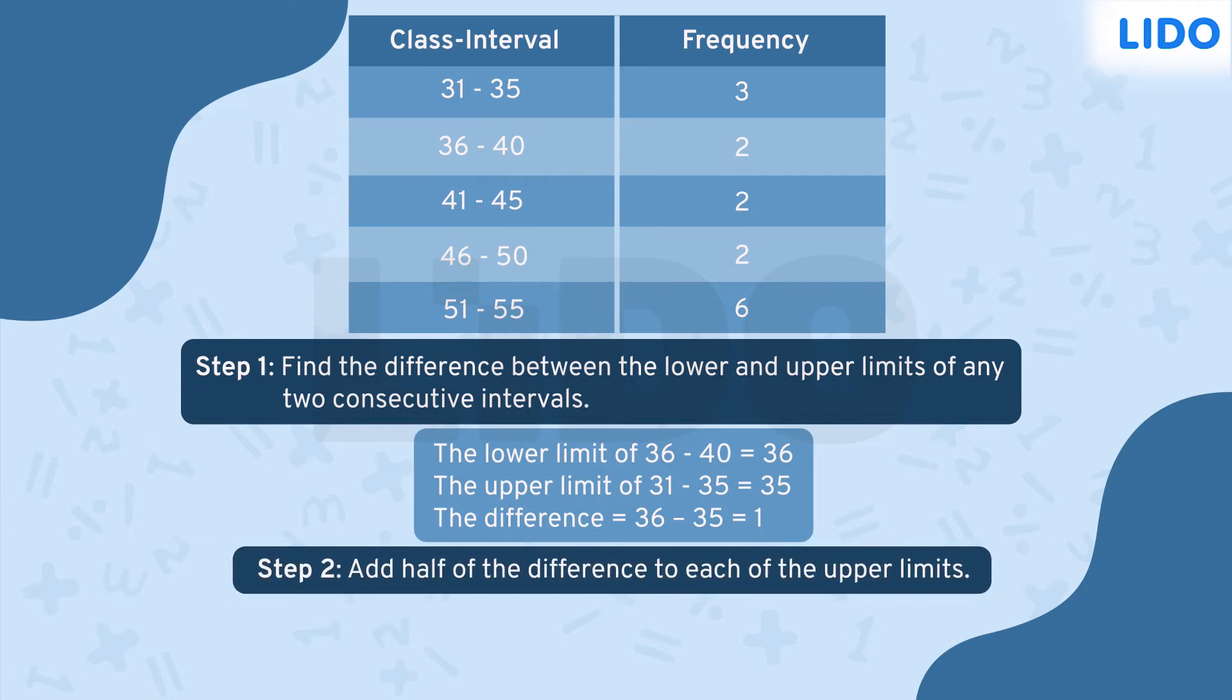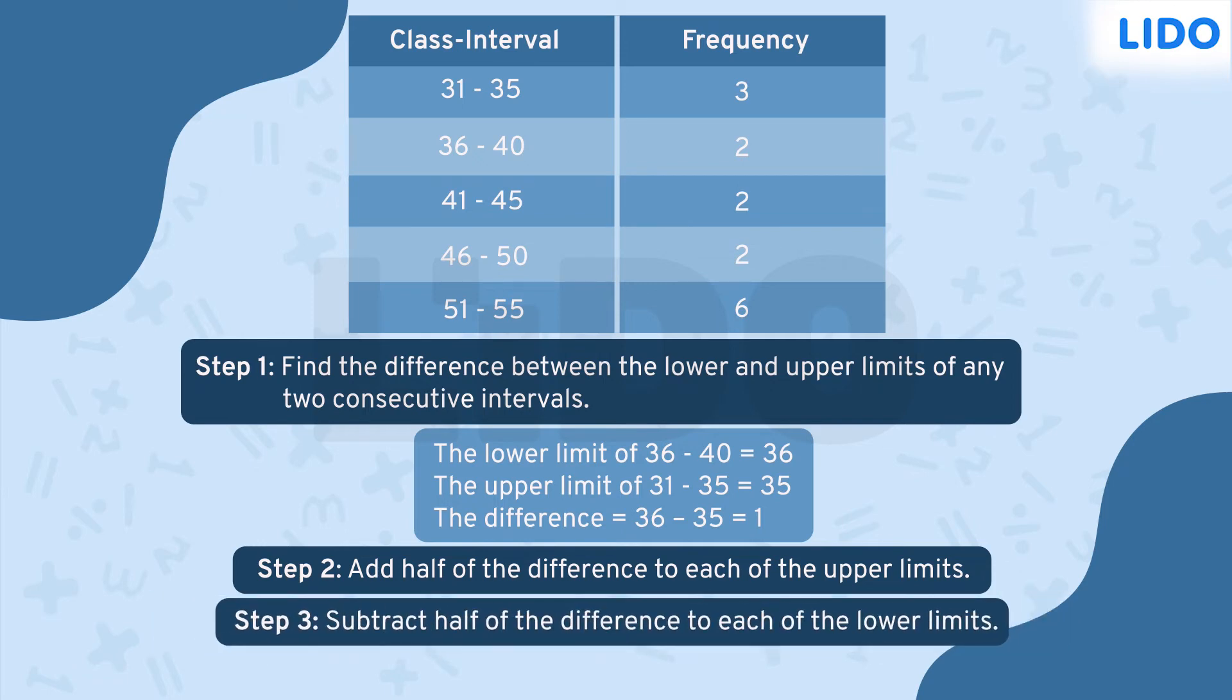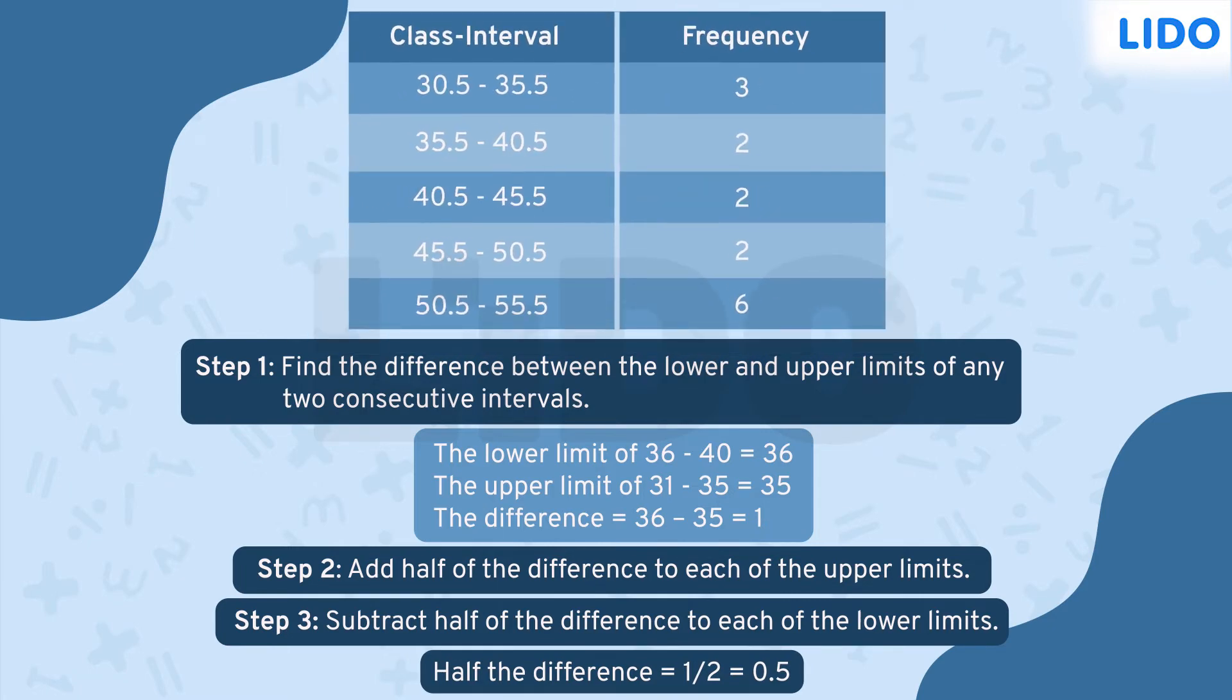Then we take half of the difference and add it to each of the upper limits while subtracting it from each of the lower limits. Here, half of the difference is 0.5. On doing so, we get these class intervals. And this is how we convert a discontinuous frequency distribution table to a continuous frequency distribution.